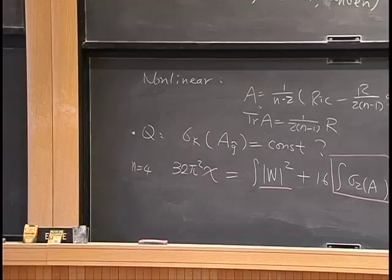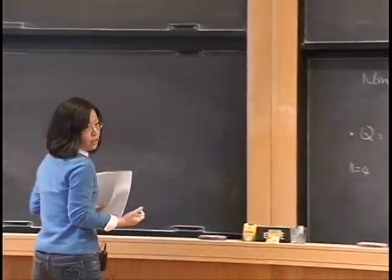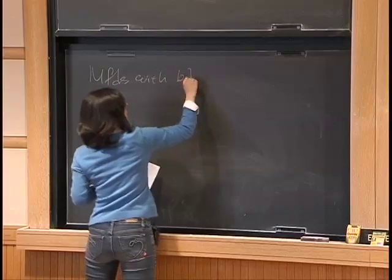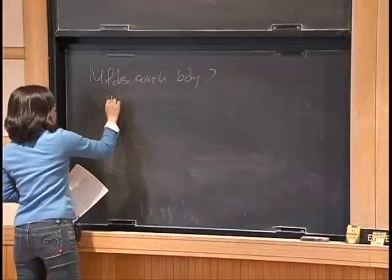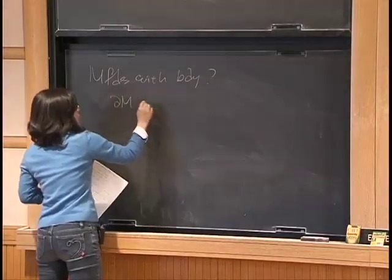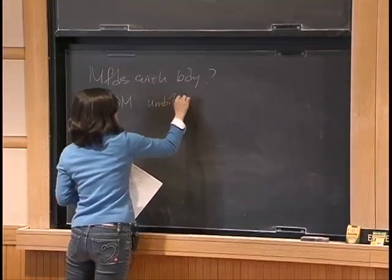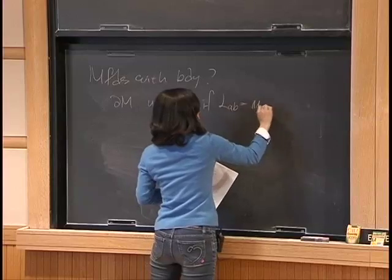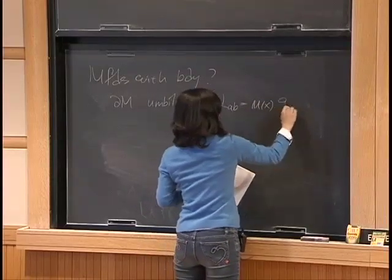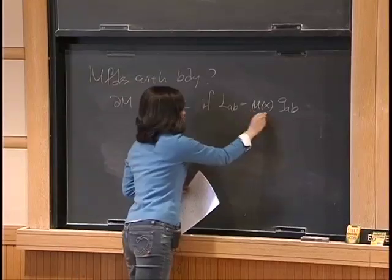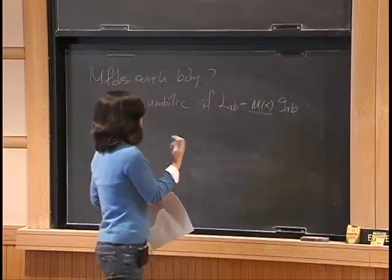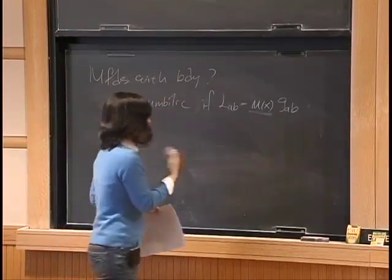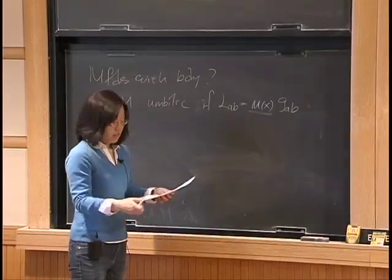Now we ask: what about the manifold with boundary? Let me introduce a definition. We say a boundary is umbilic if the second fundamental form L is equal to a function times the metric. This means at each point, the principal curvatures are all the same — it is a symmetric condition. Importantly, this is a conformally invariant condition.